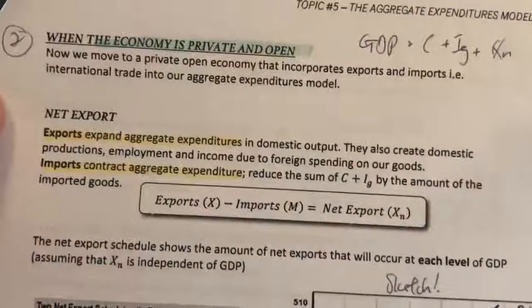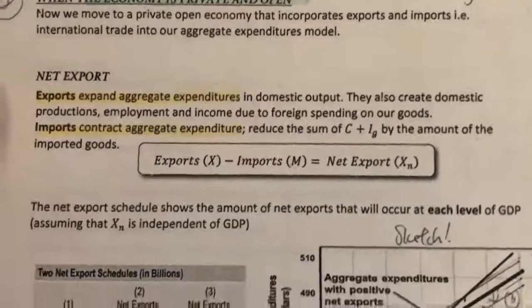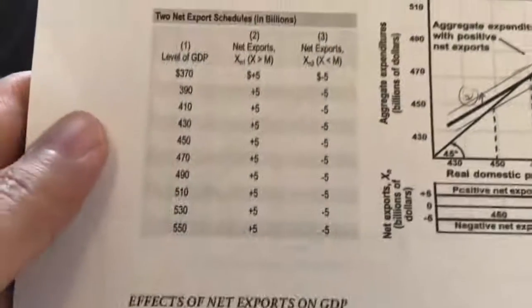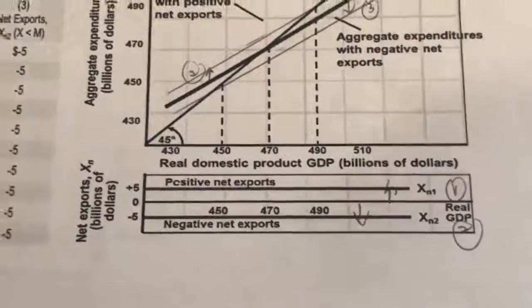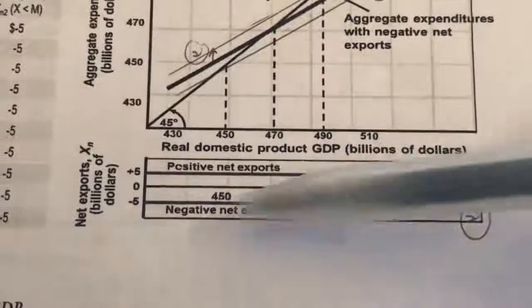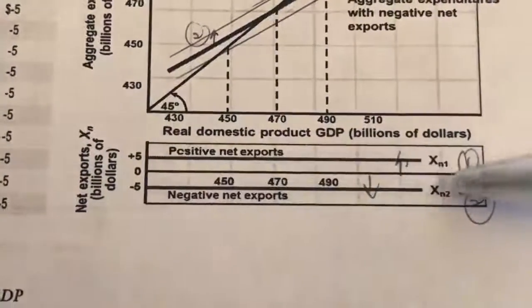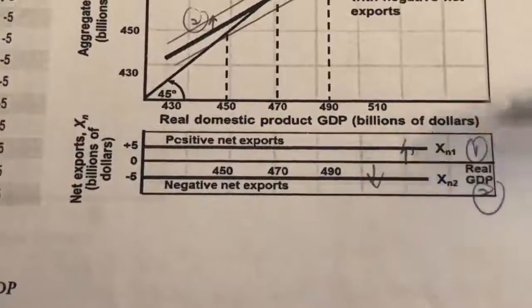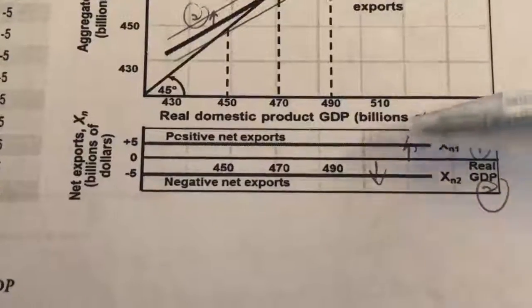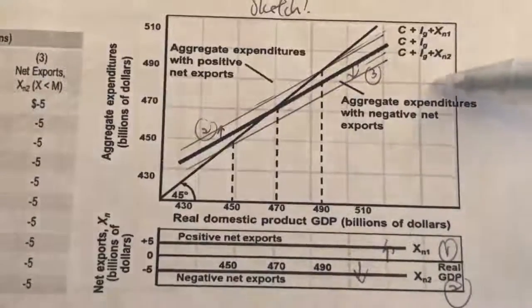Previously, you've already learned about the consumption schedule and the investment schedule. Today, we're going to look at another schedule: the net export schedule. This is how it looks. The net export schedule looks very similar to the investment schedule in that it is straight — meaning the amount of net export is the same regardless of the level of real GDP. Whether it increases or reduces, that change will be included in the total aggregate expenditure.